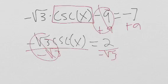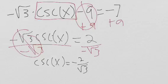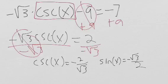Cosecant x equals negative two over root three. But cosecant is the reciprocal of sine, so we can say sine of x equals negative root three over two. We can flip them because they're reciprocals.